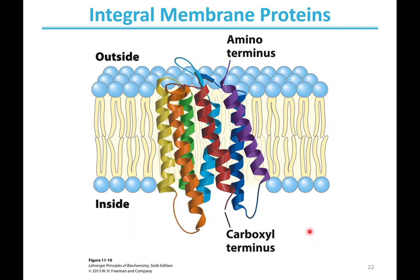An example of an integral membrane protein is bacteriorhodopsin. The 3D crystal structure shows its C-terminal on the inside of the cell and the N-terminal on the outside — showing directionality. It has seven helices that span the entire length of the membrane. This is a good example of an integral membrane protein.